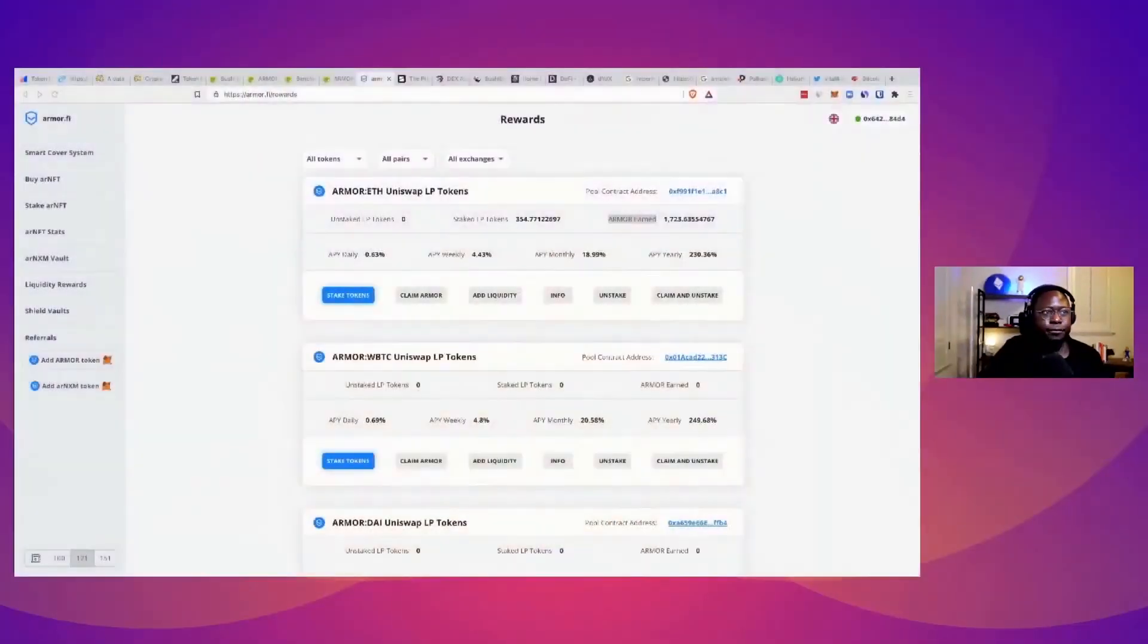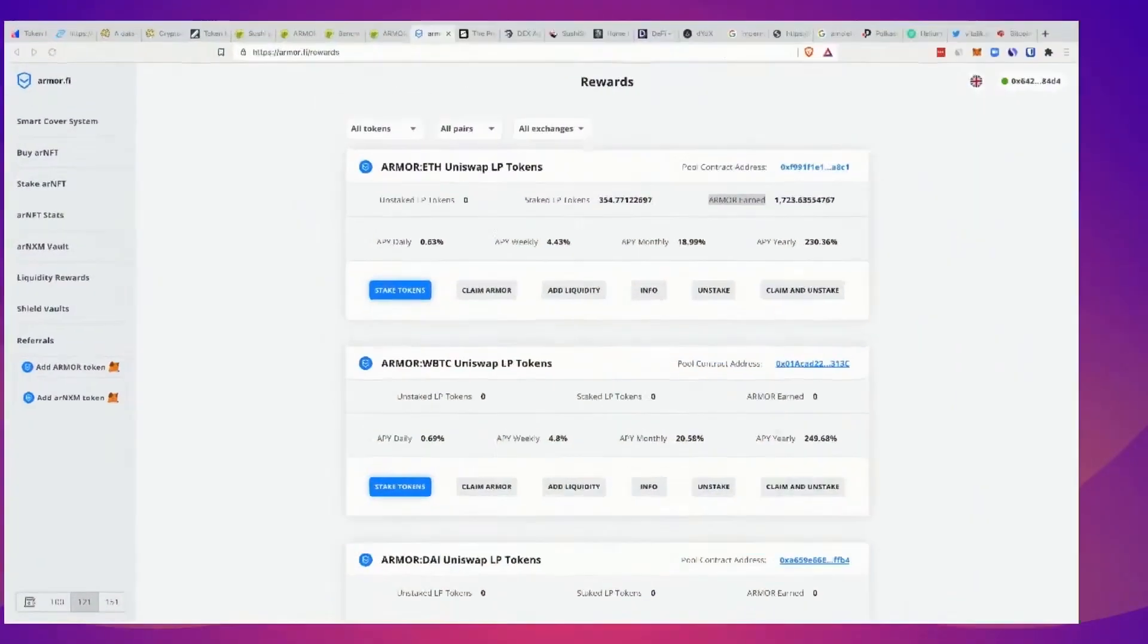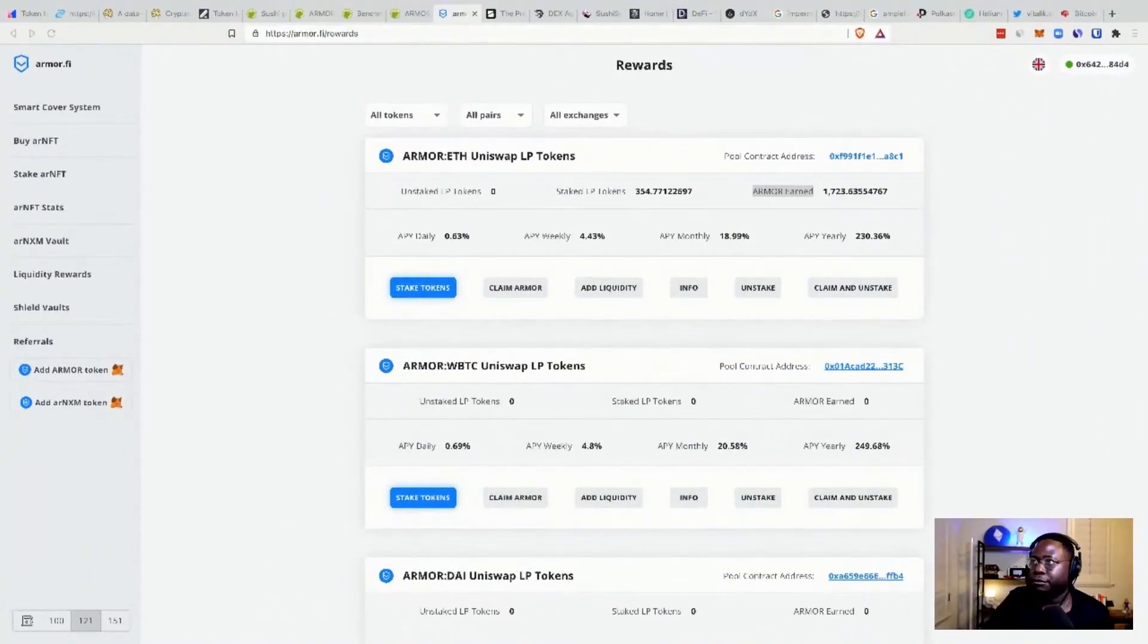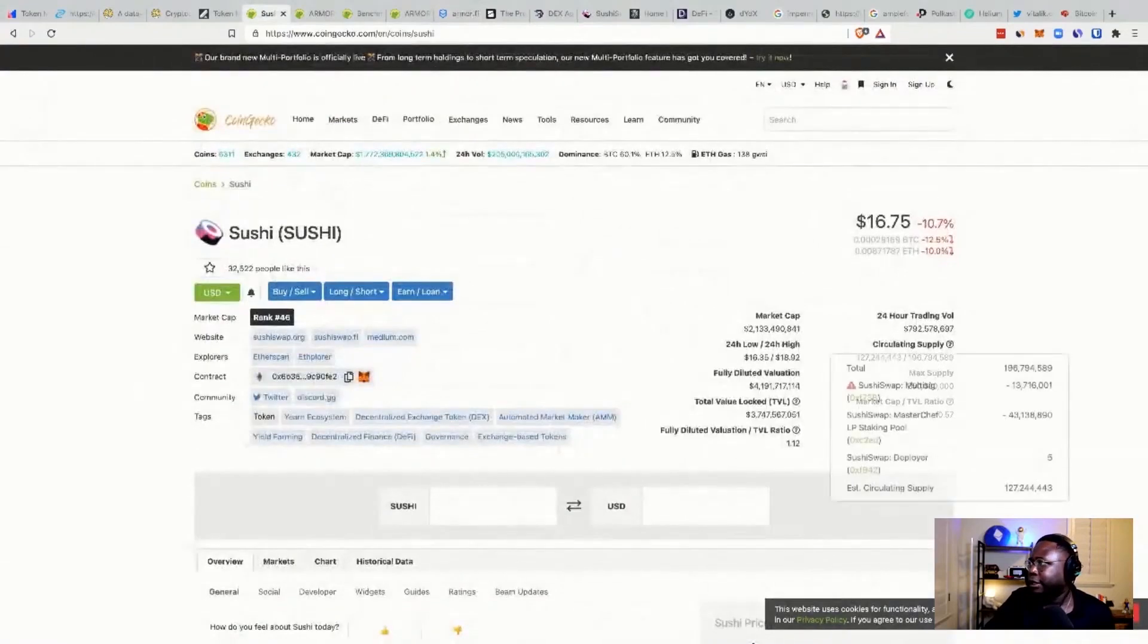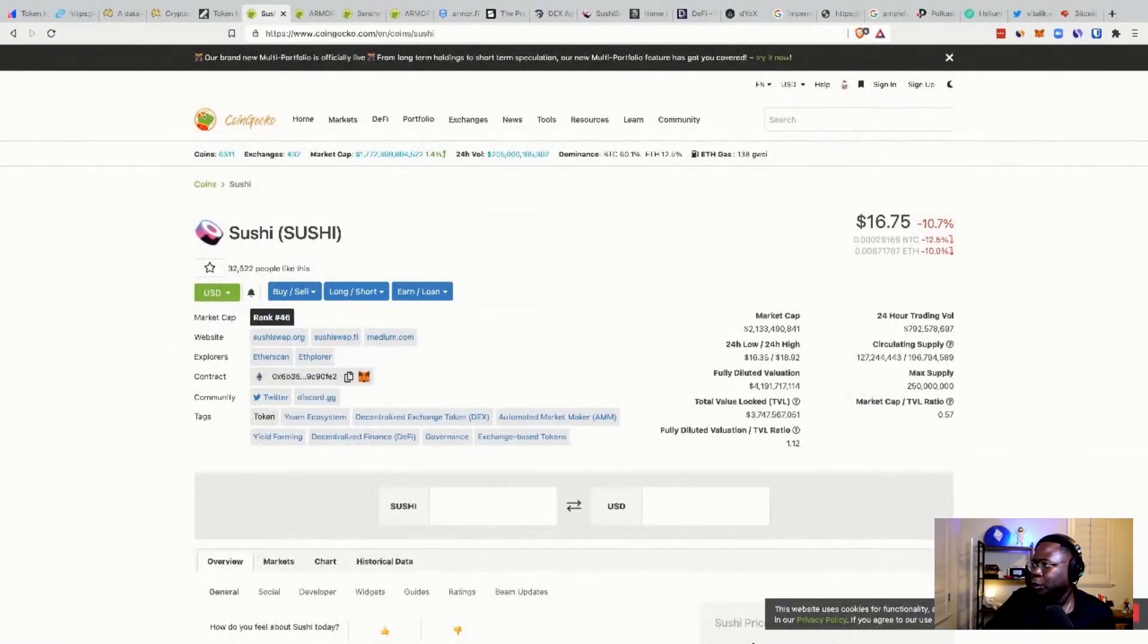Yes, supply, you have to factor in supply. But it's not really the number of tokens per se. Let me bring up my screen again. For example, if we go to SushiSwap, the supply here is 250 million max supply. Currently there are 196 million, and only 127 million are circulating, meaning that they're liquid on exchanges and can be transferred.